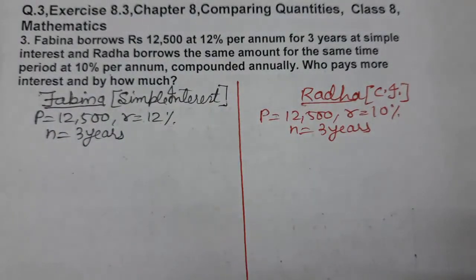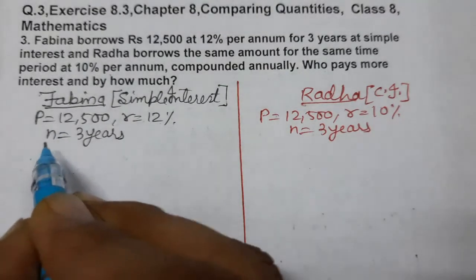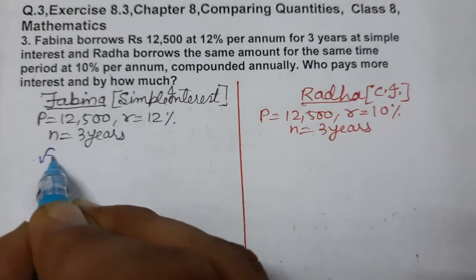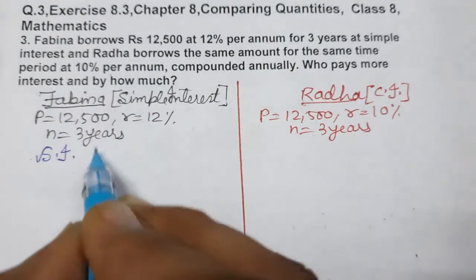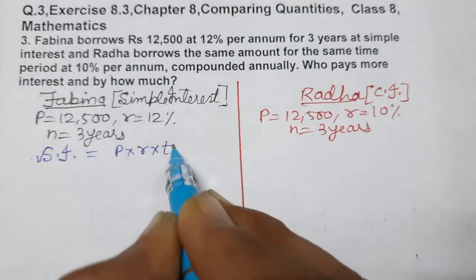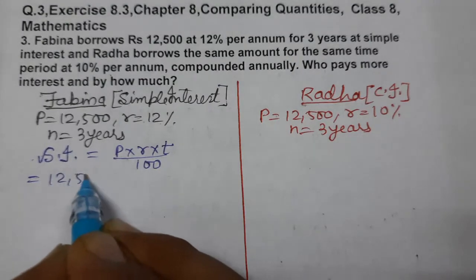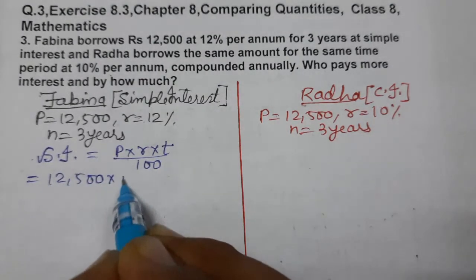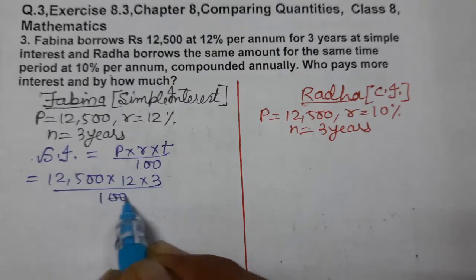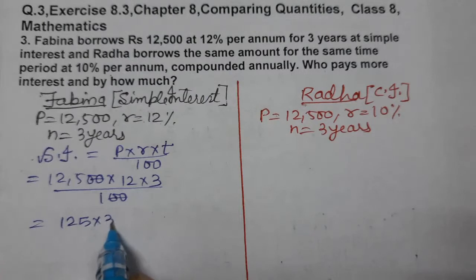First, let's find Fabina's simple interest. The simple interest formula is P × R × T / 100. Principal is 12,500, rate is 12, and time is 3 years, divided by 100. So 125 × 12 × 36.